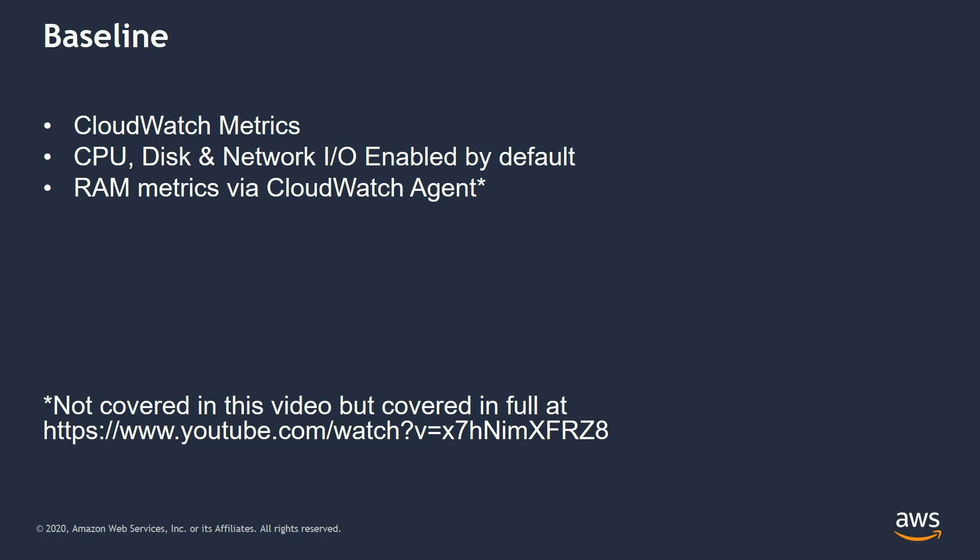We want to take these metrics and start from a baseline. If you've not already done so, I'd recommend that the CloudWatch agent is installed on all of your Windows Server instances. This will allow you to configure extra metrics such as RAM — these aren't on by default. My colleague Sia Vash has an excellent short video on how you can do this. The link is below.